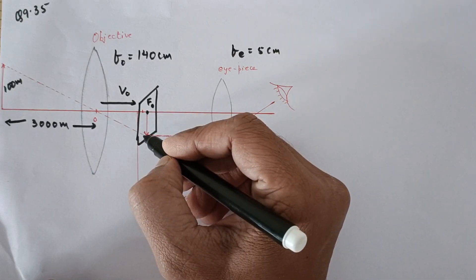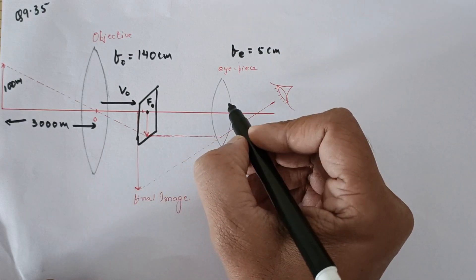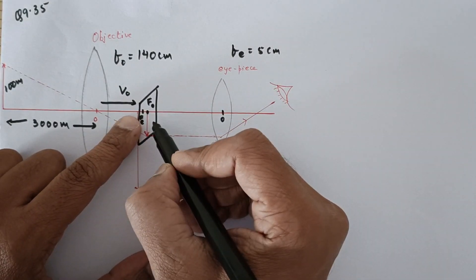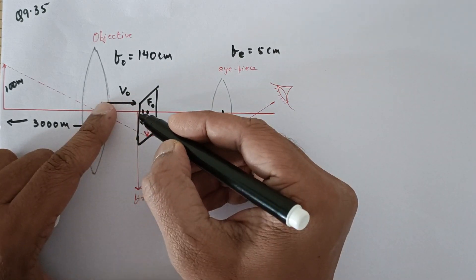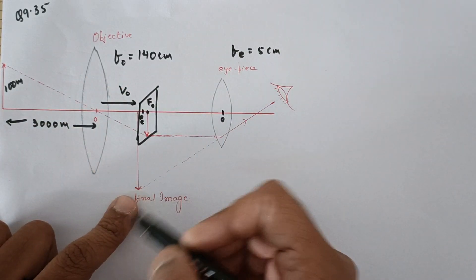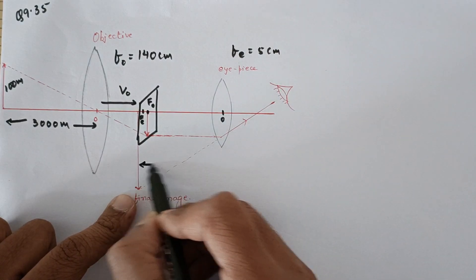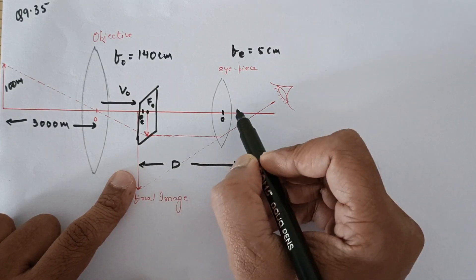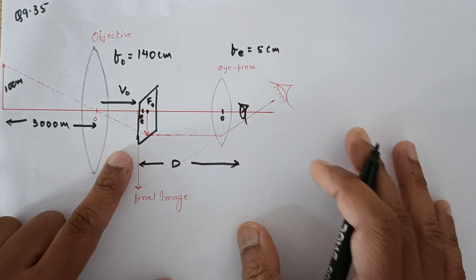Now this image behaves as an object for the eyepiece. This image falls between the optical center and the focus of the eyepiece, so this image which is behaving as the object is between O and F. You get a large virtual image on the same side of the lens. In the problem they have given that the final image is formed at D, so this distance from the eye is located at 25 centimeters. Since the eye is very close to the lens, you can consider the distance from here to the eye as almost 25 centimeters.